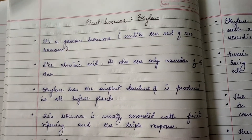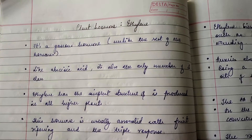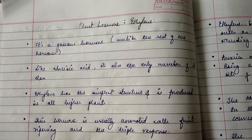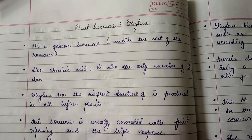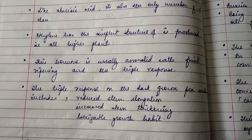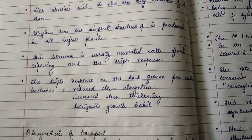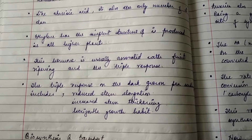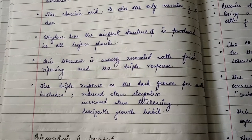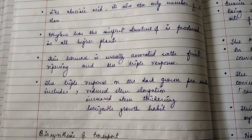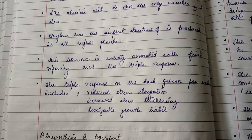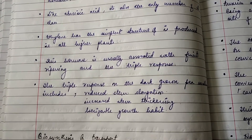Ethylene is a gaseous hormone, unlike the rest of the hormones which are synthesized inside the plant in other forms. Like abscisic acid, ethylene is the only member of its own class. It has the simplest structure and is produced in all higher plants. This hormone is usually associated with fruit ripening. In early days, other toxic gases were used for ripening, but those were replaced by ethylene, which is now used for fruit ripening and also for the triple response.